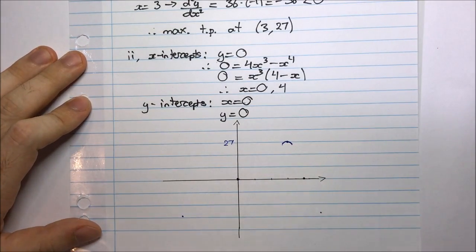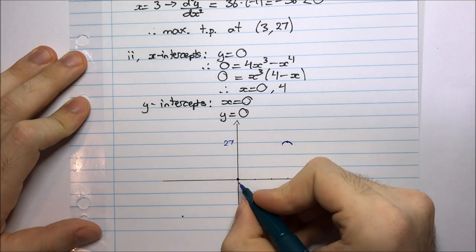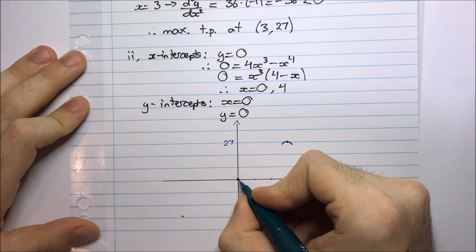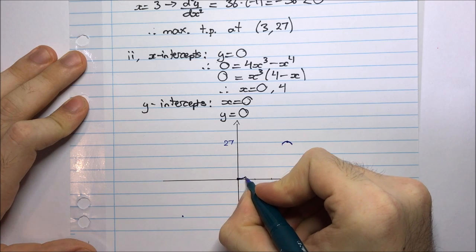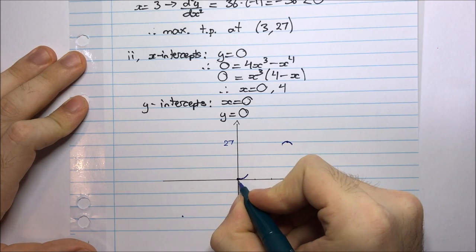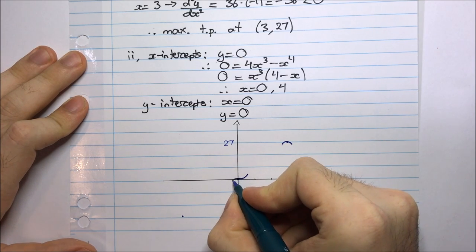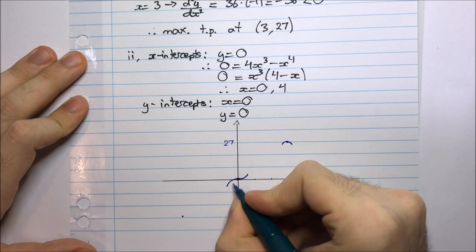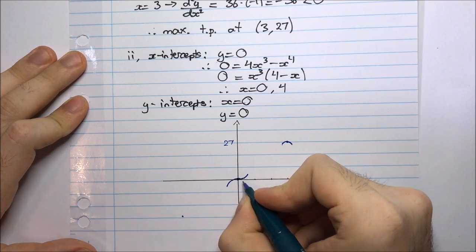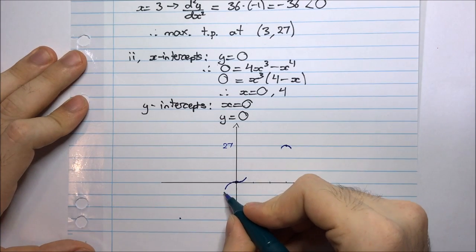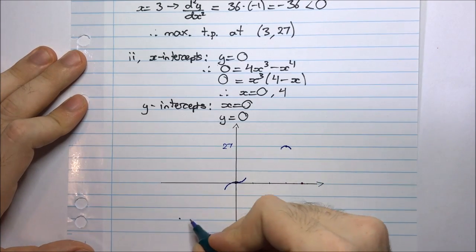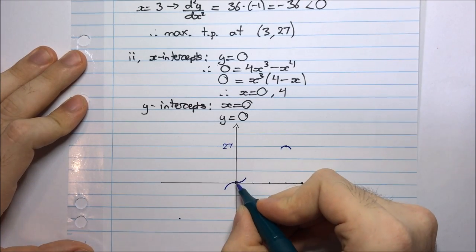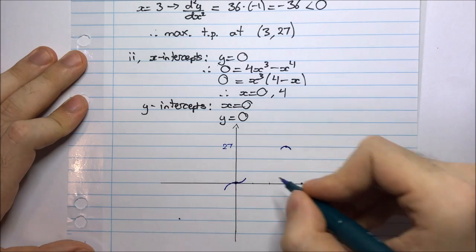For large values in the negative direction, I'm negative — down here somewhere. The horizontal point of inflection at the origin means the graph is going to have zero gradient there, but it's not going to turn. It's going to go up, be zero, and then up again.